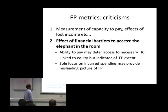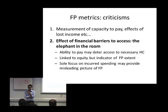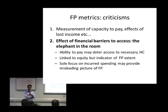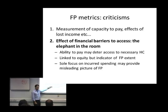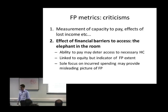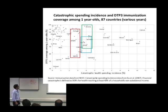Both catastrophic spending and impoverishing spending are based on out-of-pocket payments as reported in household surveys, so they ignore the fact that lack of capacity to pay may lead households to defer access to necessary care, and therefore they report very low or zero healthcare expenditures. No catastrophic spending or impoverishing spending is recorded, yet these individuals are considered to enjoy adequate financial protection when they report zero healthcare expenditures because they can't afford to pay for care. If we focus solely on incurred out-of-pocket spending, this will provide a very misleading picture of financial protection levels, both to guide policy making and for international performance comparisons.